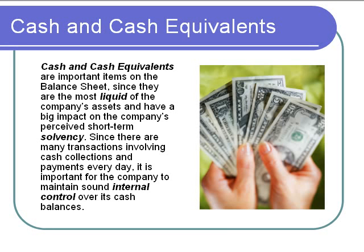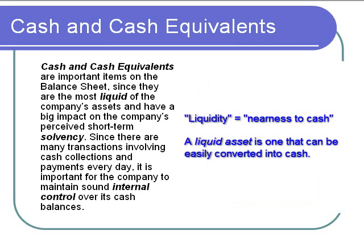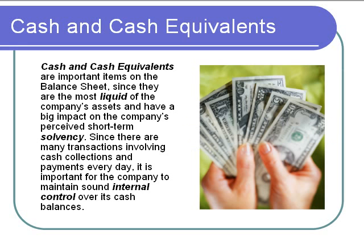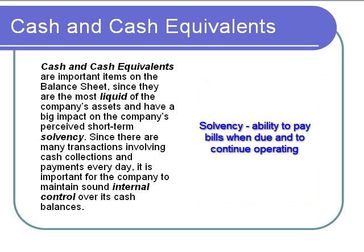There is a lot of concern in accounting about cash and cash equivalents, because these two assets are the most liquid of all the company's assets and have a great bearing on the company's perceived short-term solvency. Liquidity refers to the company's ability to raise cash, and a liquid asset is one that can be turned into cash in a relatively short period of time and with reasonable certainty. The more liquid a company is, the better able it is to meet its obligations when they come due and to bail itself out of trouble if unexpected emergencies arise. A company that's not very liquid may not be able to meet its current obligations, may not be able to survive an emergency, and when a company can't pay its bills, we refer to the company as being insolvent, and this usually leads to bankruptcy.